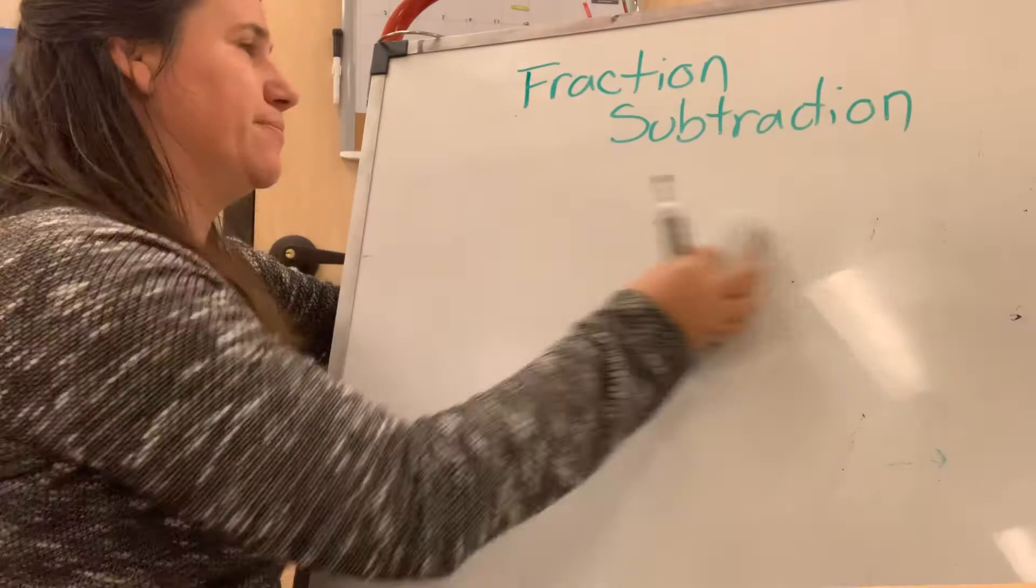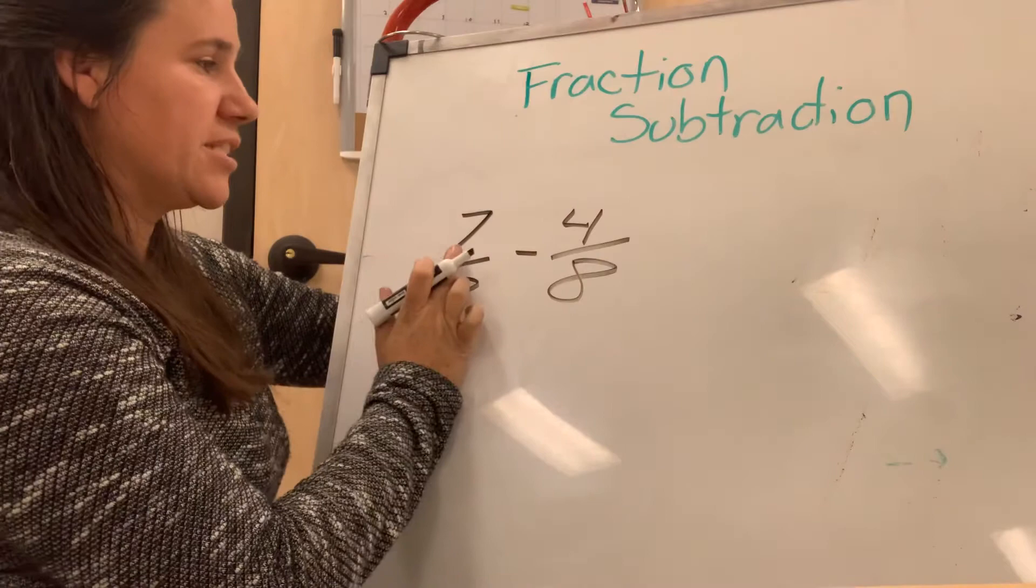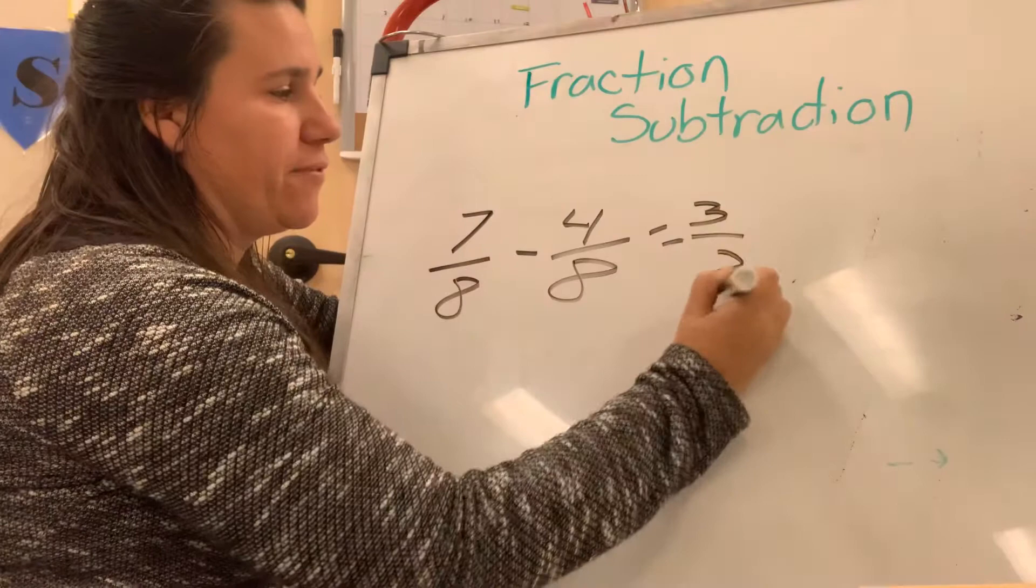Let's try one a little bit more complex. Let's do seven-eighths minus four-eighths. So seven minus four is three. Keep the denominator the same for eight. So that'd be three-eighths.